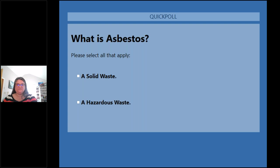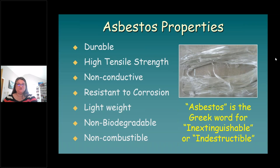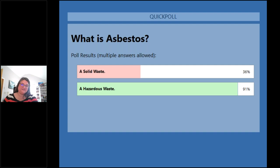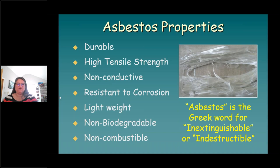The word asbestos comes from the Greek word meaning indestructible or inextinguishable. It has been known by many other names, including mountain leather, incombustible linen, and rock floss. The name chrysotile, one of the most common forms of asbestos, is derived from the Greek words chrysos — gold — and tylos — fiber — or 'gold fiber.'